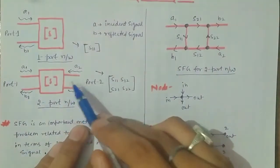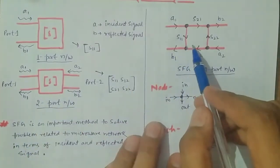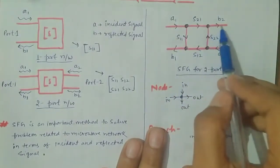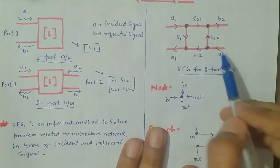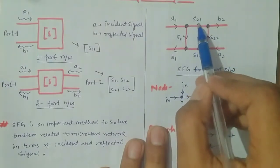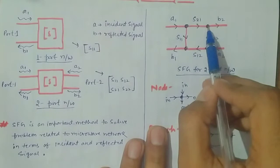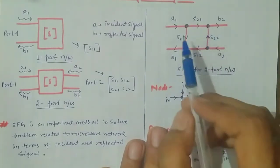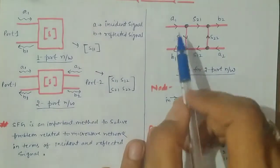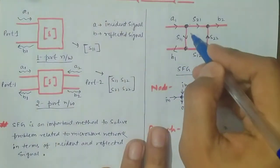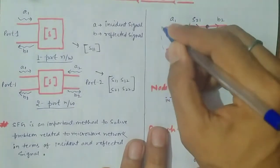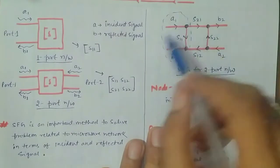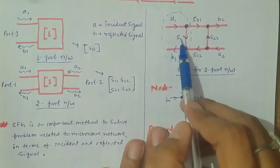Now I will draw the SFG of this two-port network — I have already drawn it to save time. You can see A1 is the incident signal at port 1, B1 is the reflected signal at port 1, B2 is the reflected signal at port 2, and A2 is the incident signal at port 2. S21 is the transmission coefficient from port 1 to port 2, and S12 originates from port 2 and reaches port 1, with arrows indicating the same.